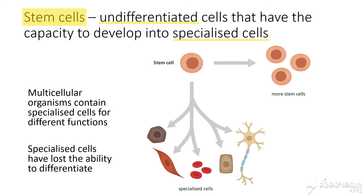So we have stem cells here. They can become more of themselves through mitosis — so become more stem cells — or they can become differentiated into different types of cells that make up our bodies and all living organisms. Here we have a neuron, some blood cells, muscle cells, some lining cells, and maybe immune cells. These are all different types of specialised cells.